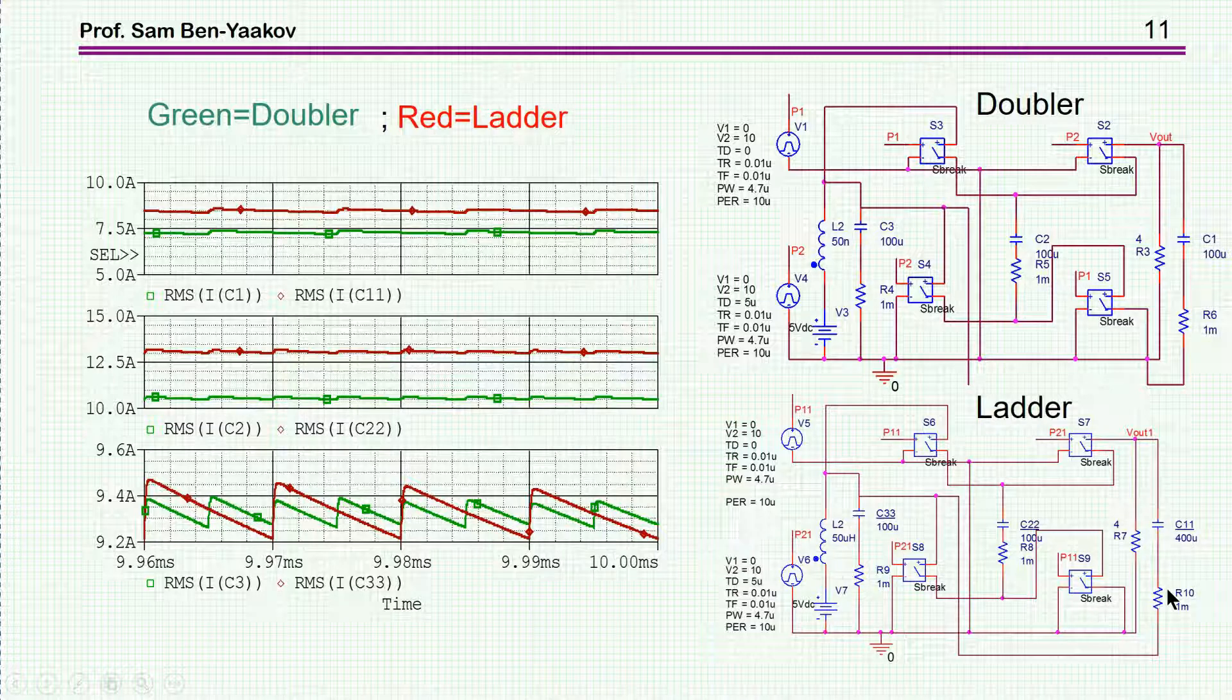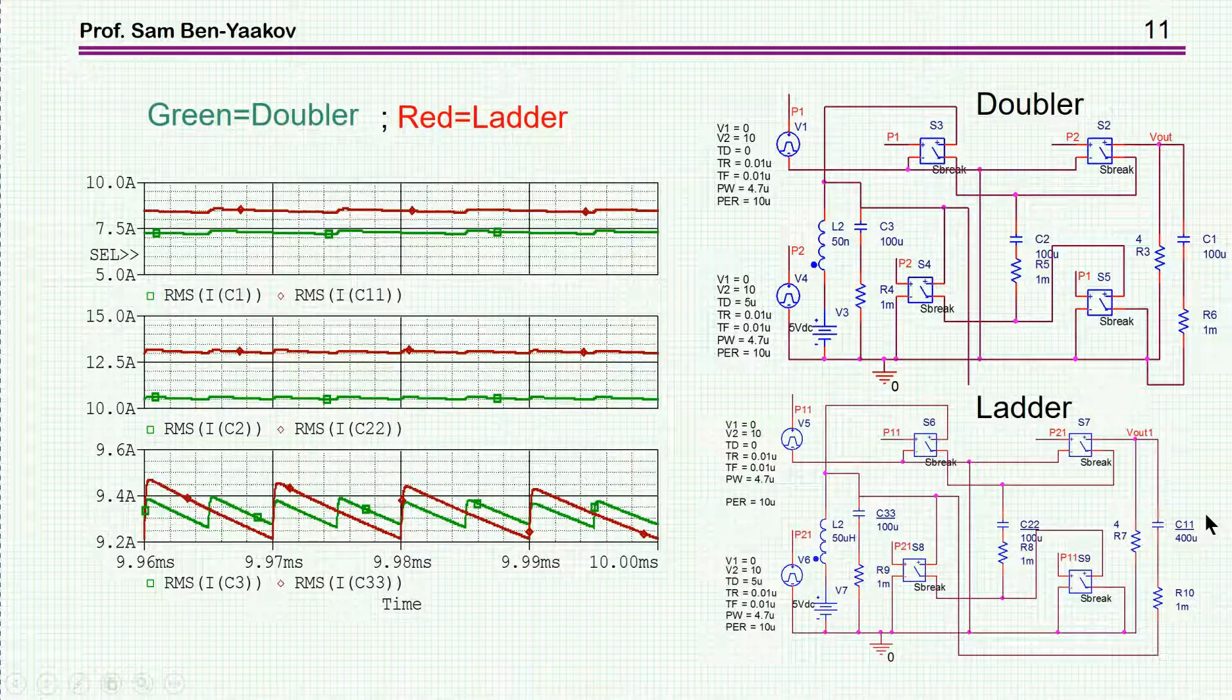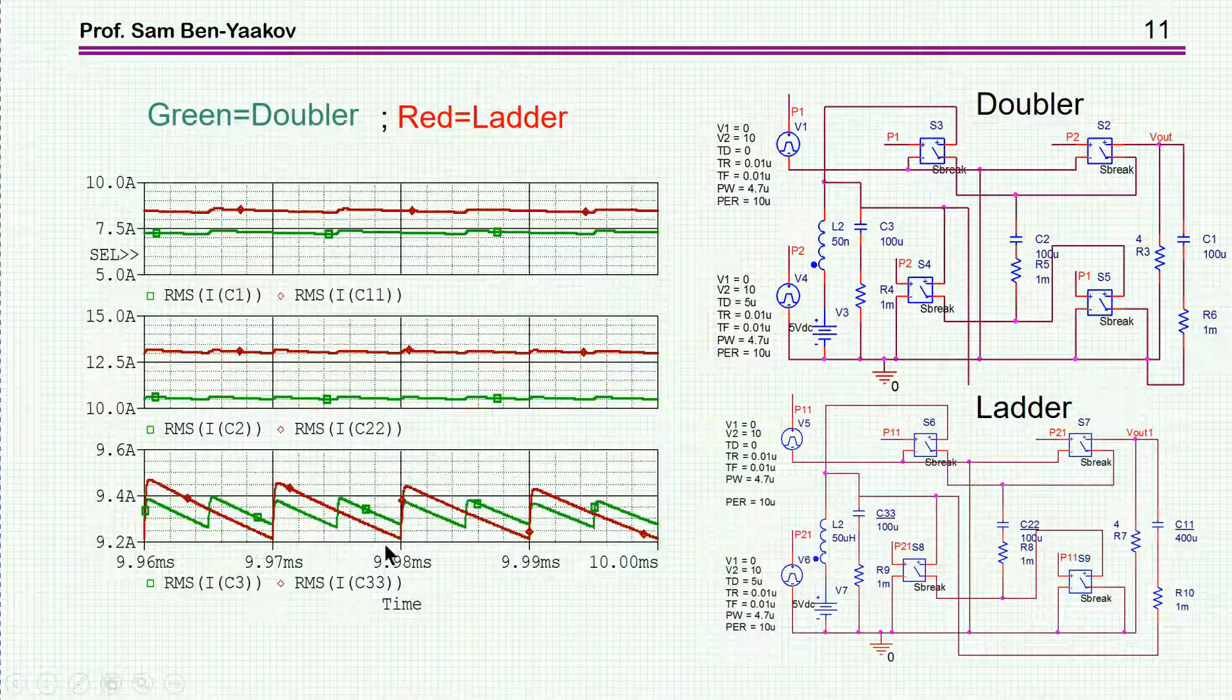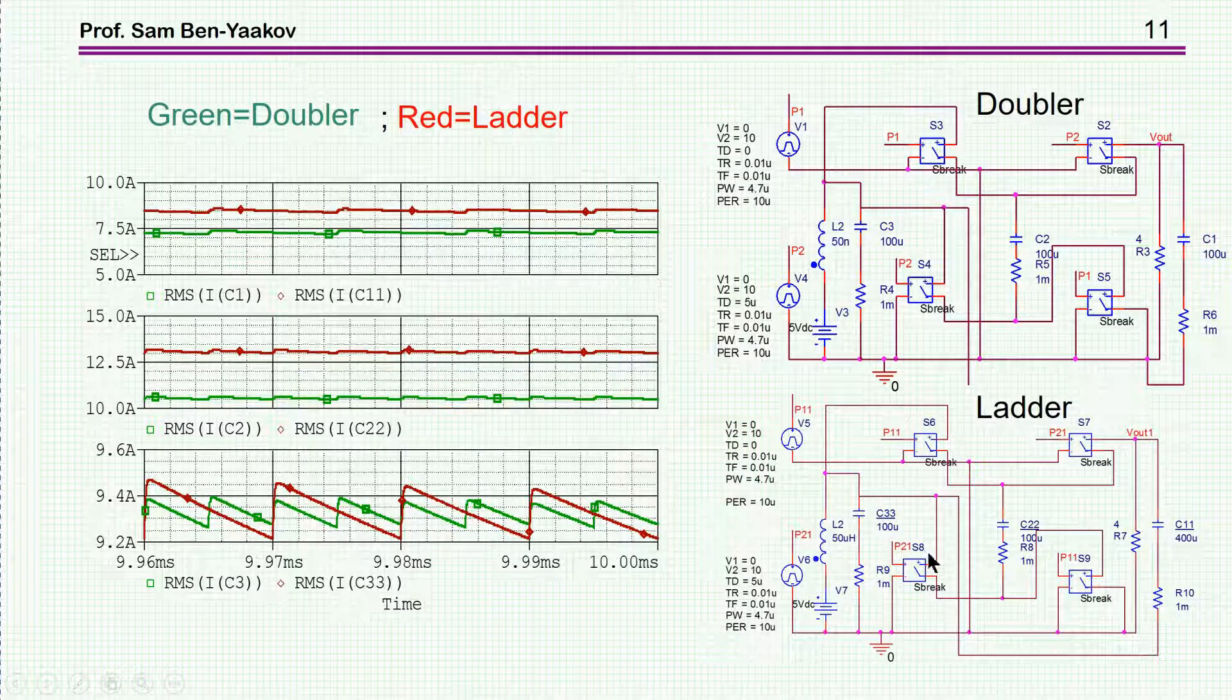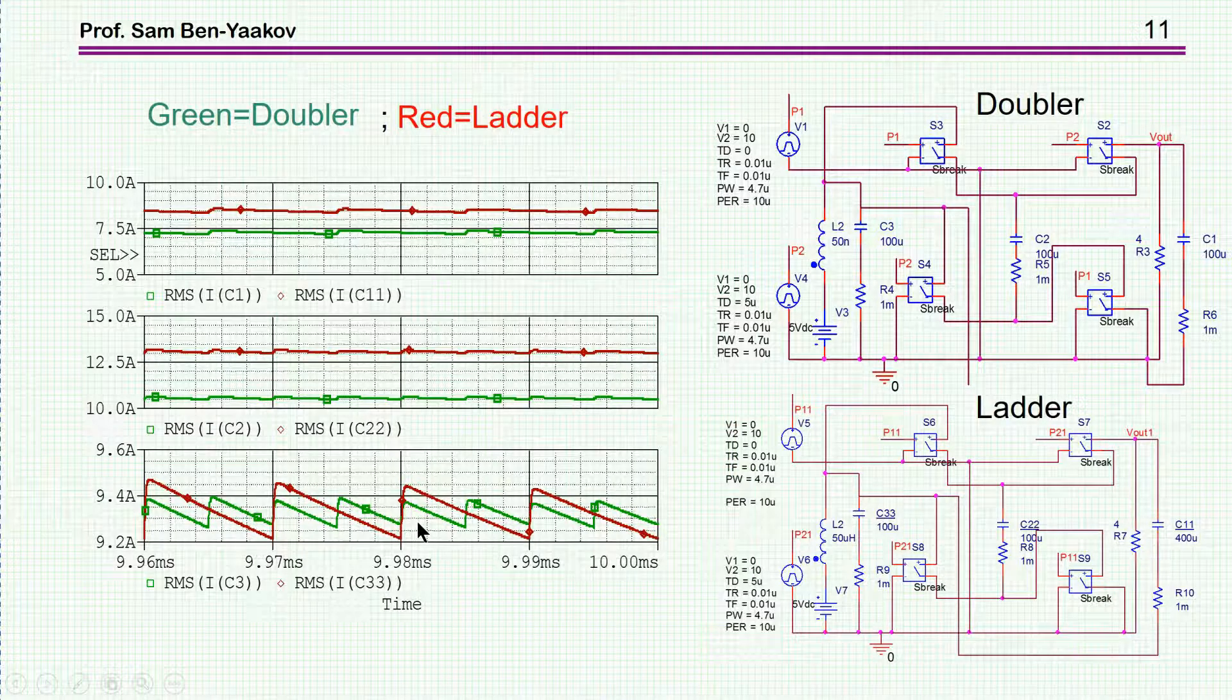In practice, however, some capacitors do not change that much when you change the voltage rating. For example, a ceramic capacitor does not change much between, say, 10 volts and 5 volts. However, just to look at the situation with this increased value of capacitor, which is justified because of the fact that the voltage on the capacitor is lower, I've run this simulation too. And what I see here is that still the RMS value of the ladder, which is the red one, is higher for these capacitors, except for the input, which is IC3. So, this is IC3, the input capacitor. In this case, the RMS values are just about the same.